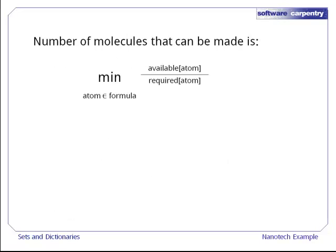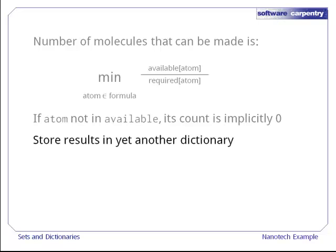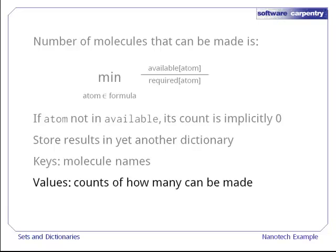The number of molecules of any particular type we can make is limited by the scarcest atom that molecule requires. In mathematical terms, we want the minimum over the atoms used in the molecule of the ratio of how many of that atom we have to how many of that atom we need. As a special case, if the atom isn't explicitly listed in our inventory, its count is implicitly zero. We'll store the results of our calculation in yet another dictionary, this one mapping the names of molecules to how many of that molecule we can make.